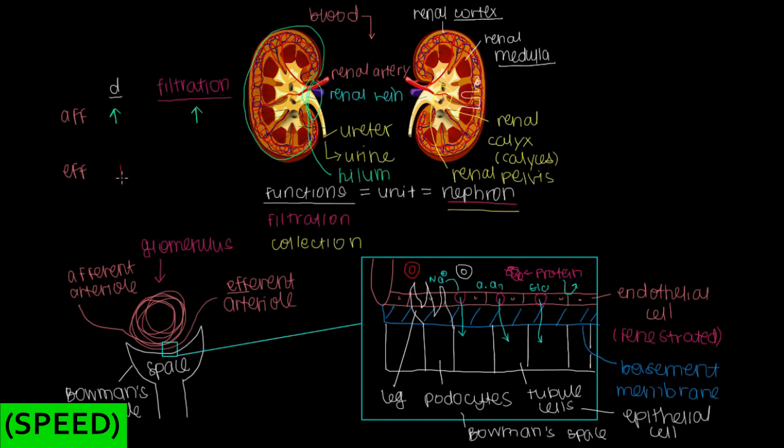Now what about if we did that with the efferent arteriole? Let's say we increase the diameter of the efferent arteriole, so there's space for more marathon runners to run away. If we increase the diameter of our efferent arteriole and allow people to leave, they're not going to stay around here for a long period of time. They're not going to be near these fenestrations. So our filtration rate will decrease because the blood is moving away from the place that it would be filtered.